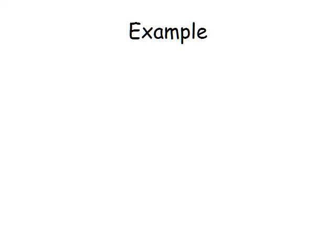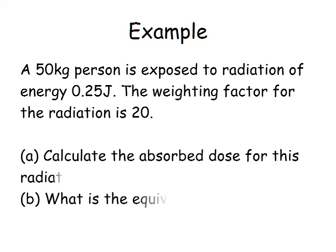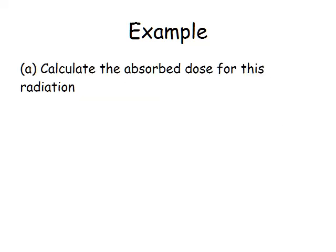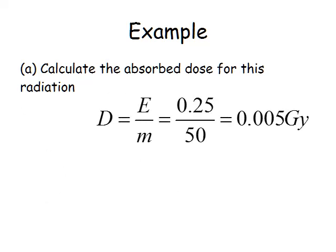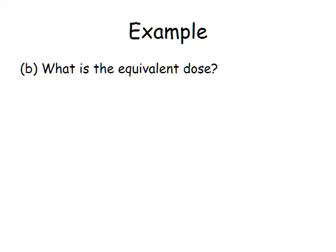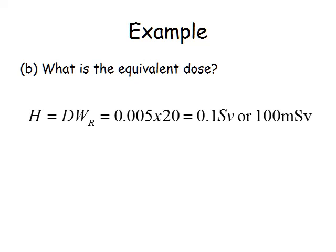Here's a worked example: a 50-kilogram person is exposed to radiation with a weighting factor of 20. Calculate the absorbed dose and the equivalent dose. The absorbed dose equals E over m: 0.25 joules divided by 50 kilograms gives 0.005 grays. Then the equivalent dose H equals 0.005 times 20, which gives 0.1 sieverts, or 100 millisieverts. You don't need to convert to millisieverts — you can leave it in sieverts.